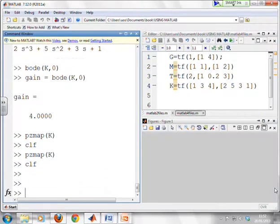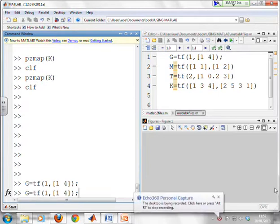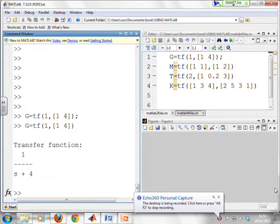What we'll do next is we will illustrate this on MATLAB. So first of all, let's enter some transfer functions and see what happens. I'm going to enter a transfer function G. There it is. I'll remove that semicolon so you can see. G is 1 over S plus 4.